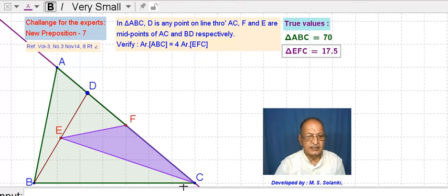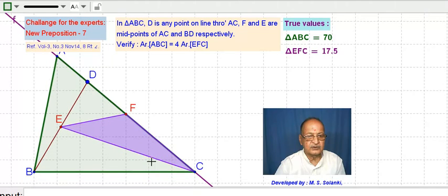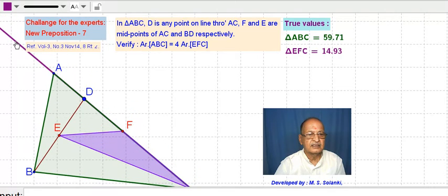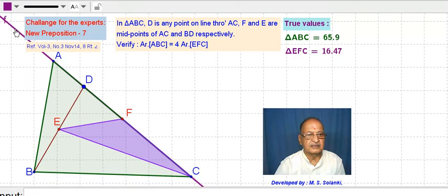A line is drawn through AC. ABC is a triangle and AC line is extended here, this side and this side also. AC is extended to both sides, and D is any point on AC.